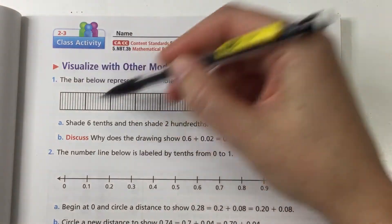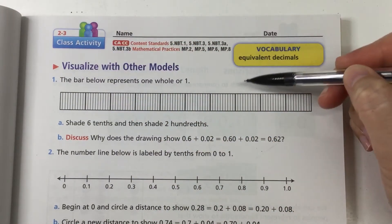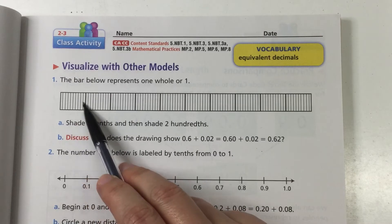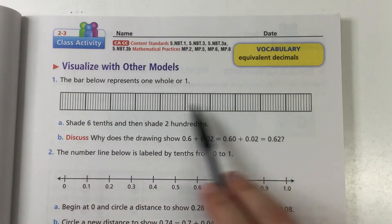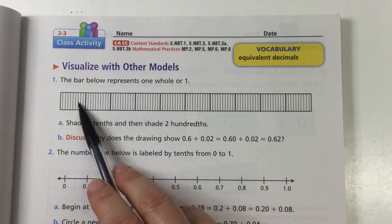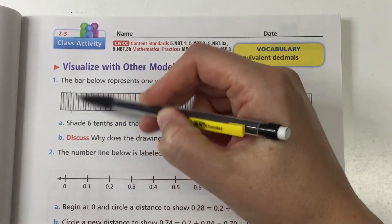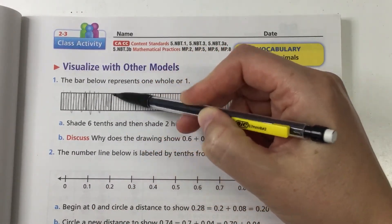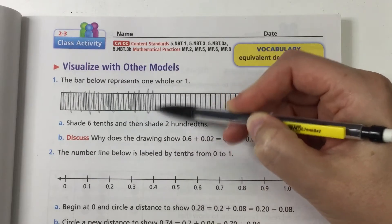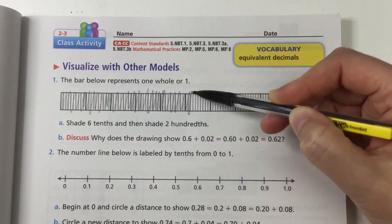Okay so if I'm going to look at this, 6 tenths is going to be a whole one of these sections right, because if this is a whole then I need to shade 6 out of 10. 1, 2, 3, 4, 5, 6.